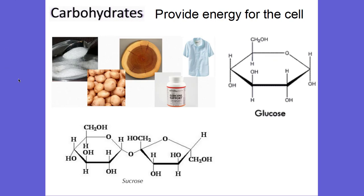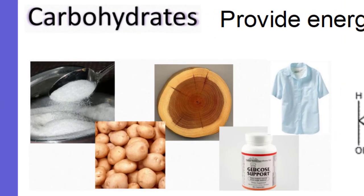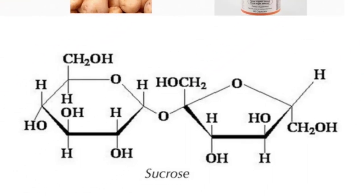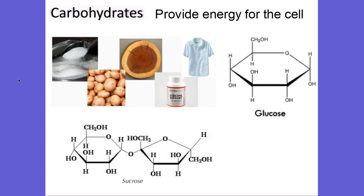The next macromolecule is carbohydrates, and they provide energy for the cell. You're talking about sugars and starches — they are high-potential energy molecules. There are monomers such as glucose, fructose, and galactose that make up carbohydrates. These carbohydrates go from a monosaccharide to a disaccharide. So glucose would be a monosaccharide, fructose would be a monosaccharide, and they bond together to make sucrose, which is a disaccharide — all your energy-producing molecules.